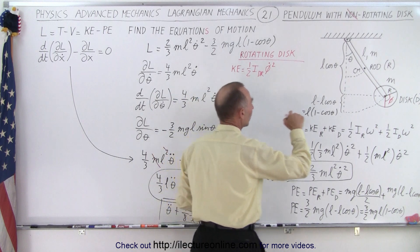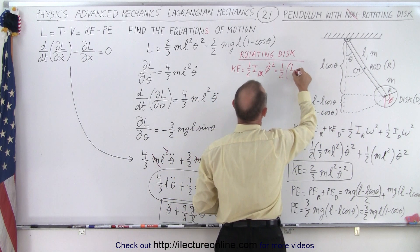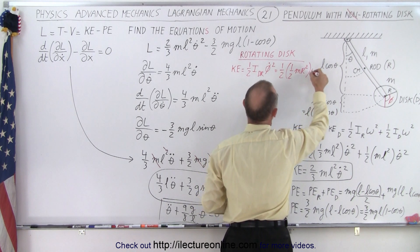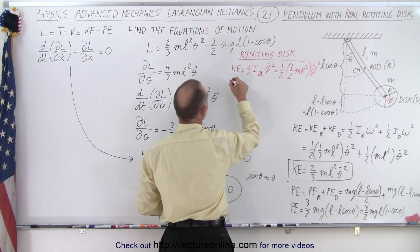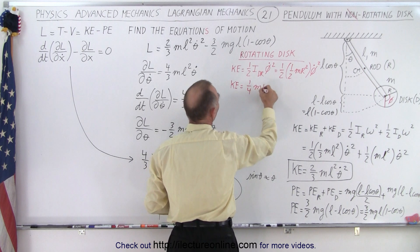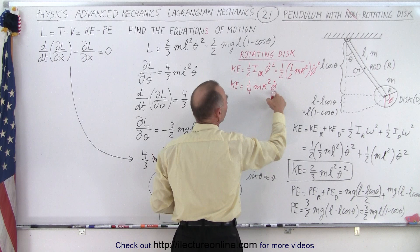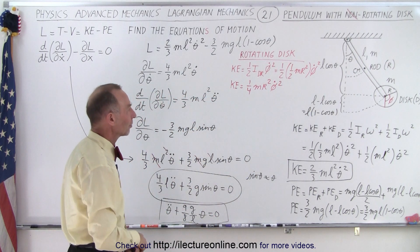And we know that the moment of inertia of a spinning disc is one half the mass of the disc times the radius squared, and of course times phi dot squared. And so the kinetic energy becomes equal to one quarter m r squared phi dot squared. All right, so that's the kinetic energy of the rotating disc.